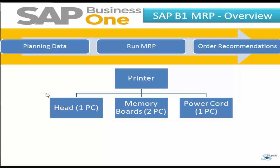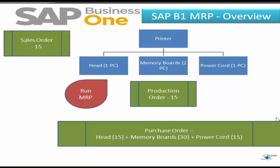Imagine that you manufacture printers. Printers are made up of a printer head, two memory boards, and a power pack or power cord, which are purchased items. To keep our example simple, we assume that no printers or components are currently in inventory, and there are no production orders or purchase orders in the system yet. In MRP, the current state of demand is modeled through open sales orders, minimum inventory levels, open production orders, and forecasts.